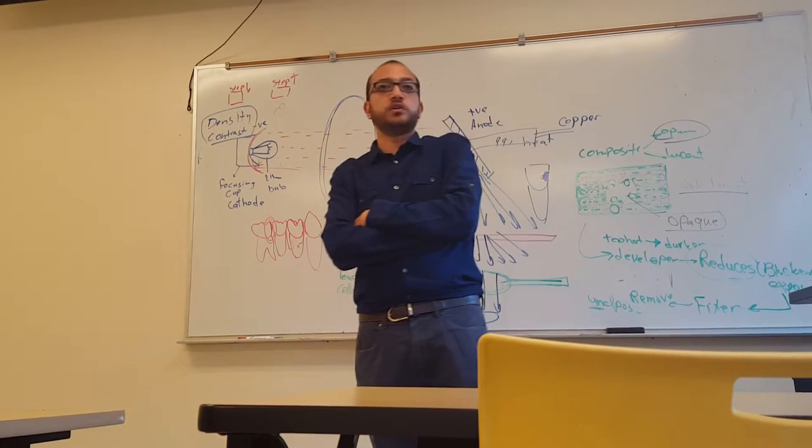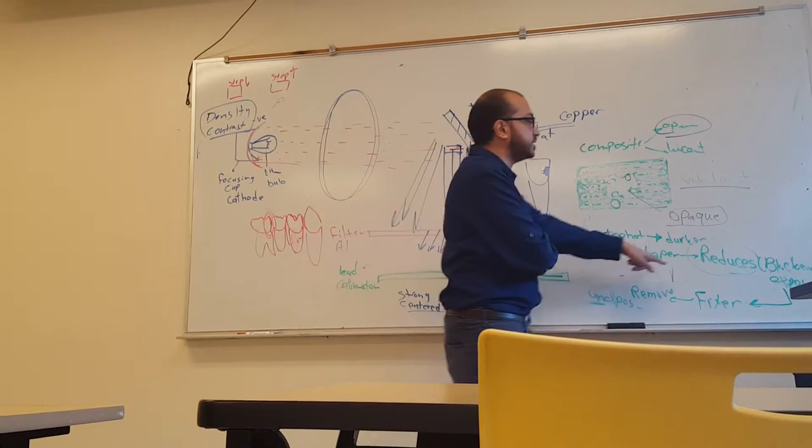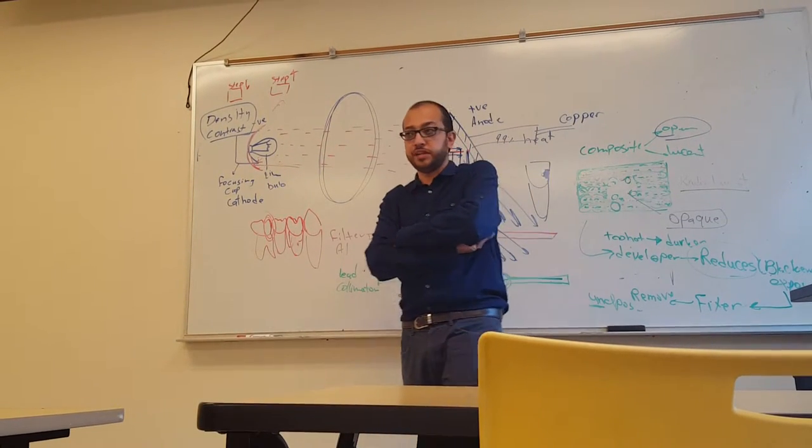What's the last one? Weak developer solution. Weak developer cause the film to be light. Because developer darkens, blackens the film. So if it's weak, you will not be darkened enough.